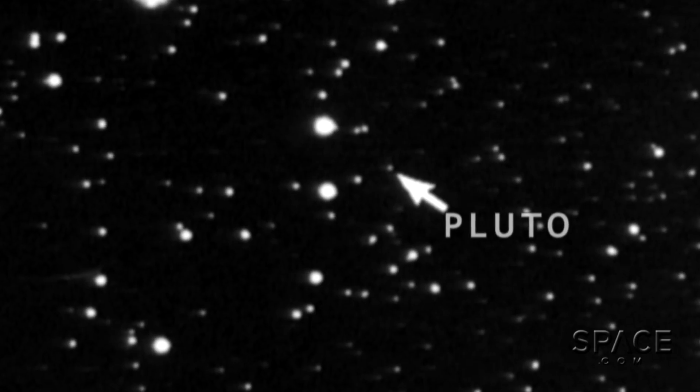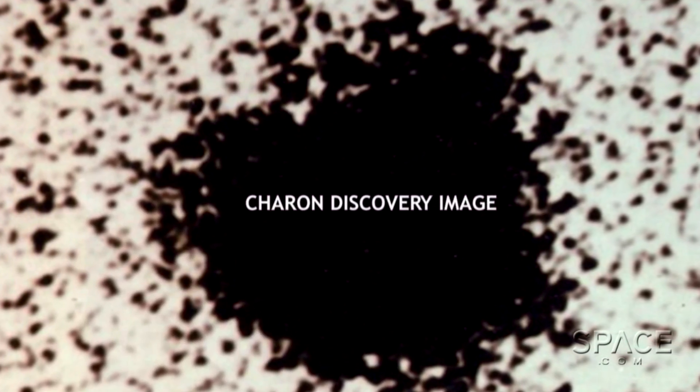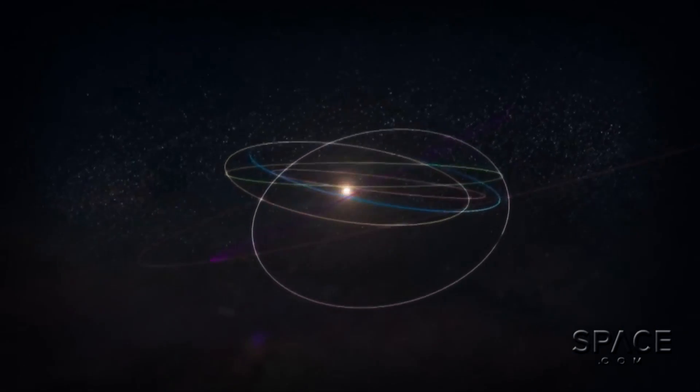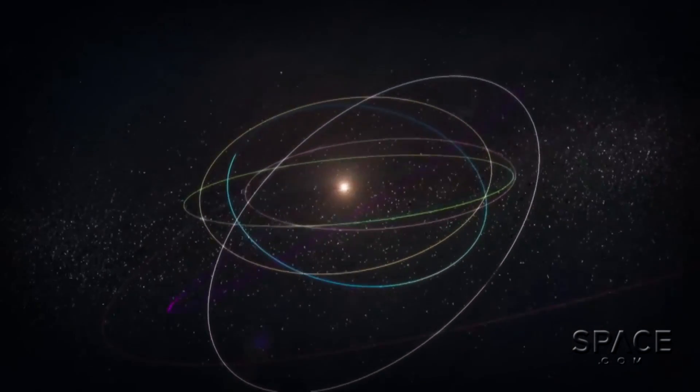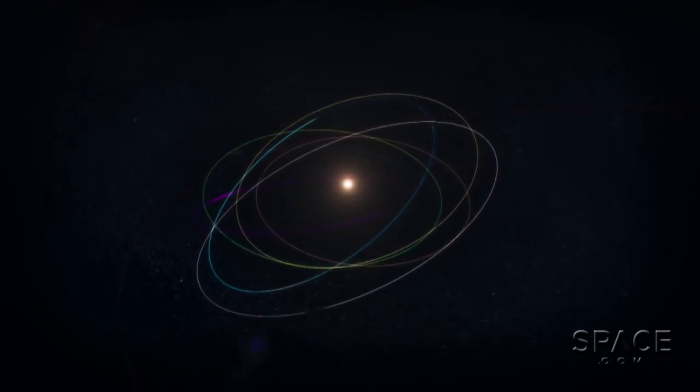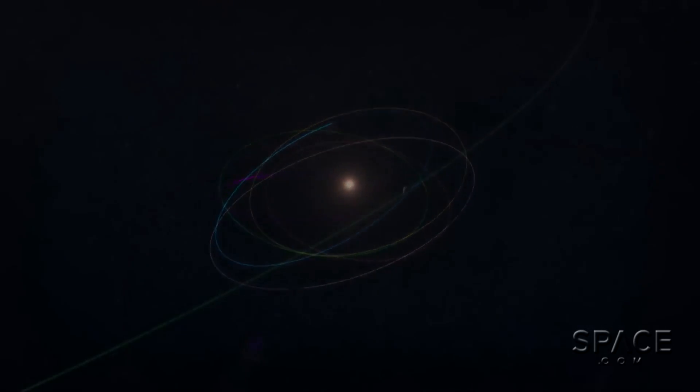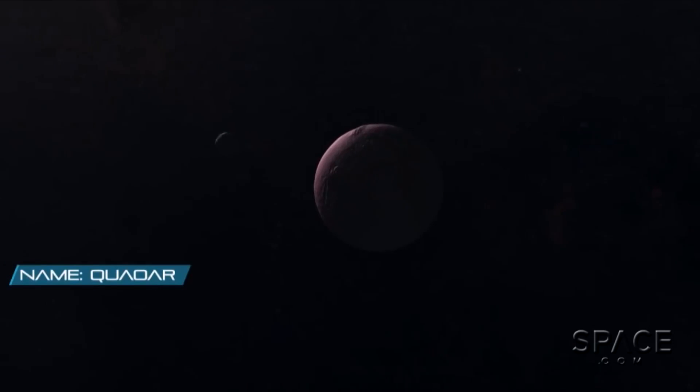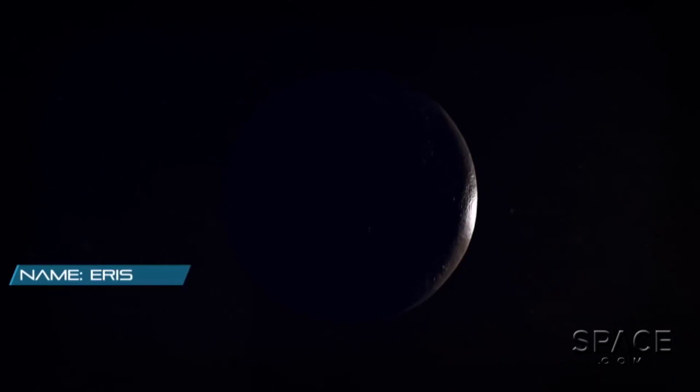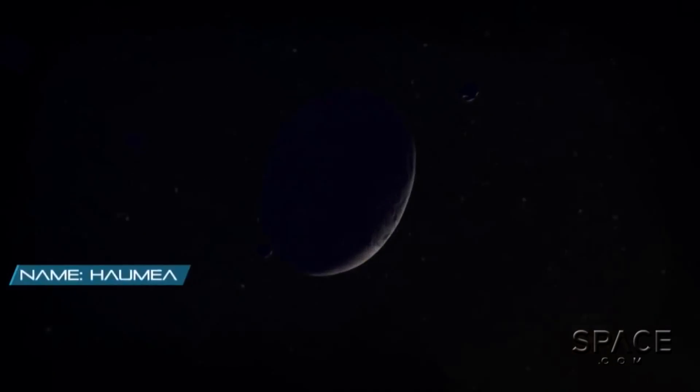Pluto was discovered in 1930. Its largest moon, Charon, was discovered in 1978. And while the existence of the Kuiper Belt was predicted in the 1940s and 50s, finding these objects proved nearly impossible for most of the 20th century. Most of the objects are less than 60 miles wide and lie more than 3 billion miles from Earth.